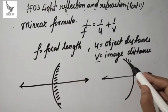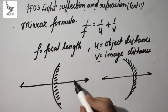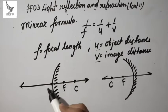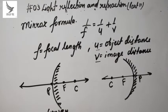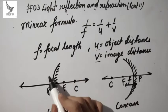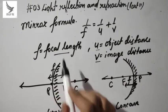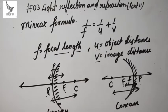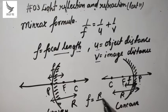Let's say we have a convex mirror with a principal axis. The center of curvature is on the outer side. The focus is here, and the pole is here. Focal length is the distance between the pole and the focus of the mirror. Similarly, the distance PC is called the radius of curvature, represented by R. The relationship is: F = R/2 — meaning focal length is half the radius of curvature.